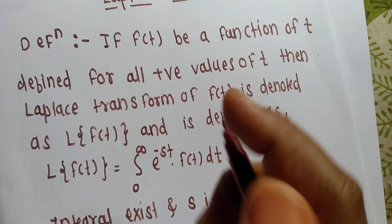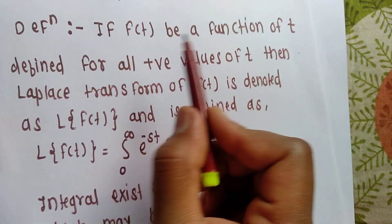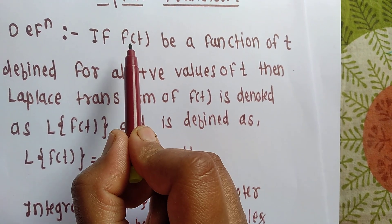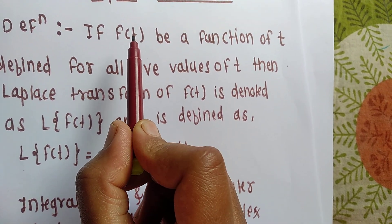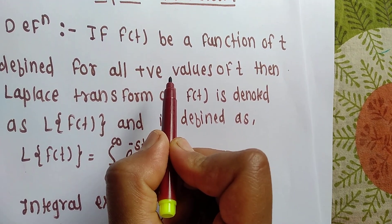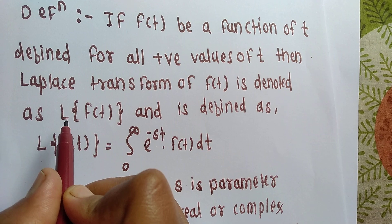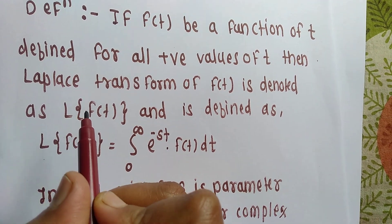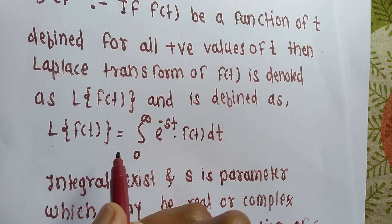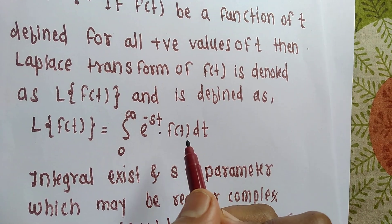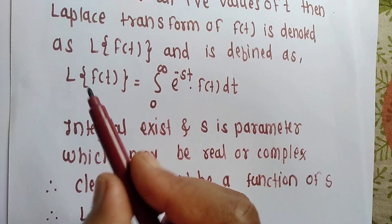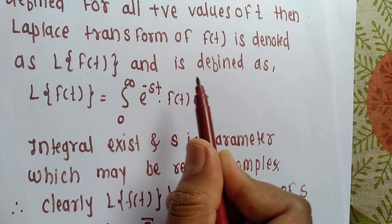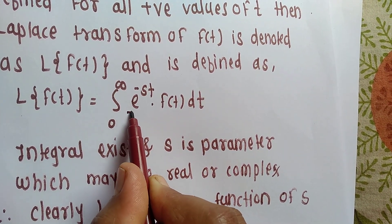So the definition: if f of t be a function of t, defined for all positive values of t — meaning t cha value je positive ahe — then the Laplace transform of f of t is defined as integration 0 to infinity of e raised to minus st into f of t dt, provided that the integral exists, meaning the integration with limit zero to infinity converges.